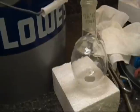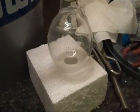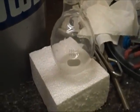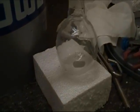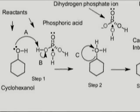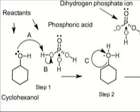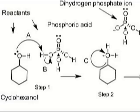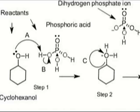While we wait for this to distill, let's take a look at the mechanism for this reaction. On the left you can see our two reactants: cyclohexanol and phosphoric acid. In step one, the oxygen atom on the alcohol abstracts a proton from the phosphoric acid to form a protonated alcohol. This is shown by arrows A and B.